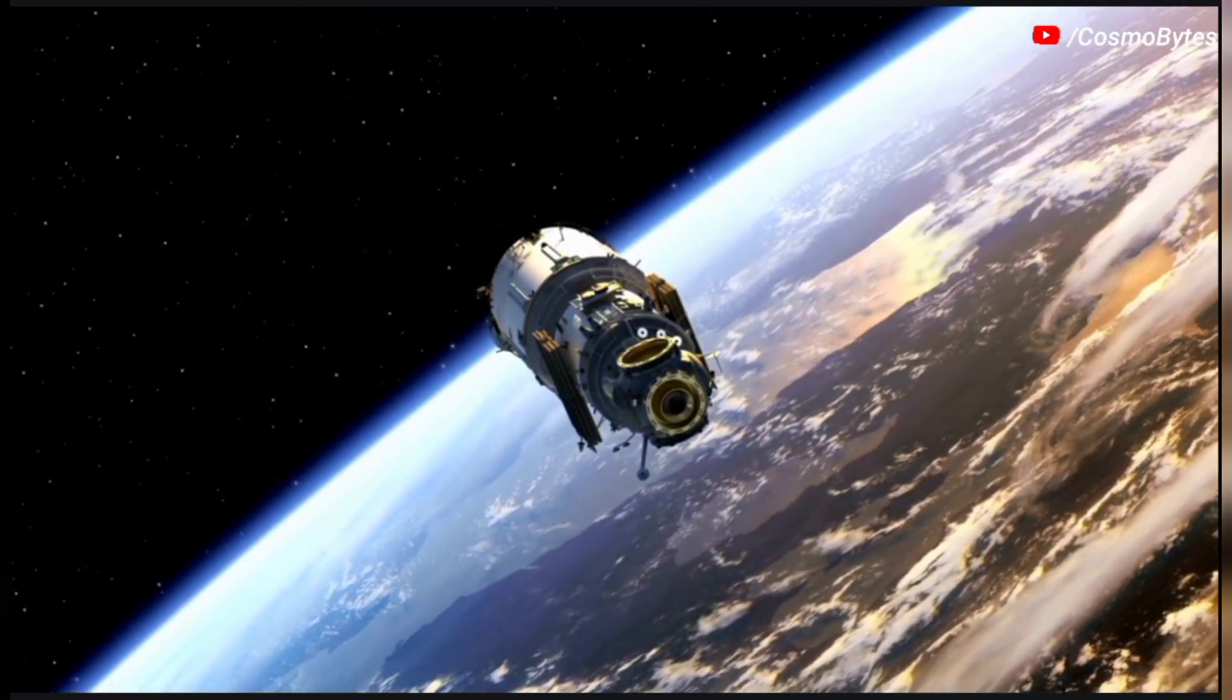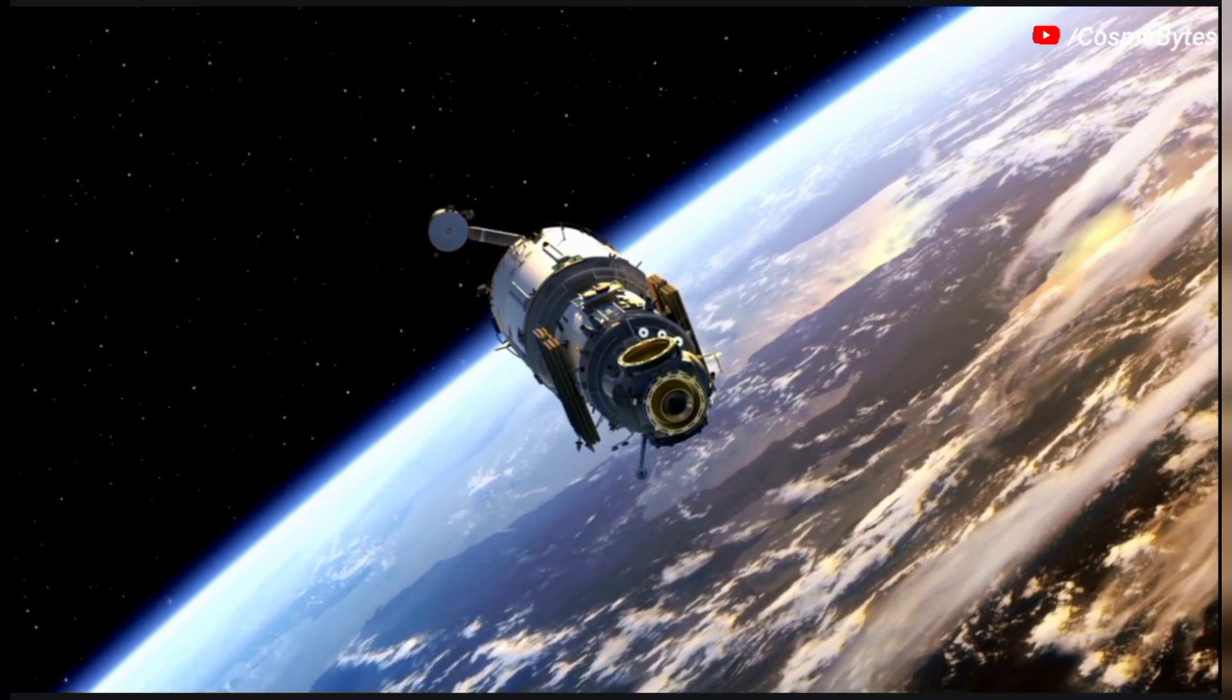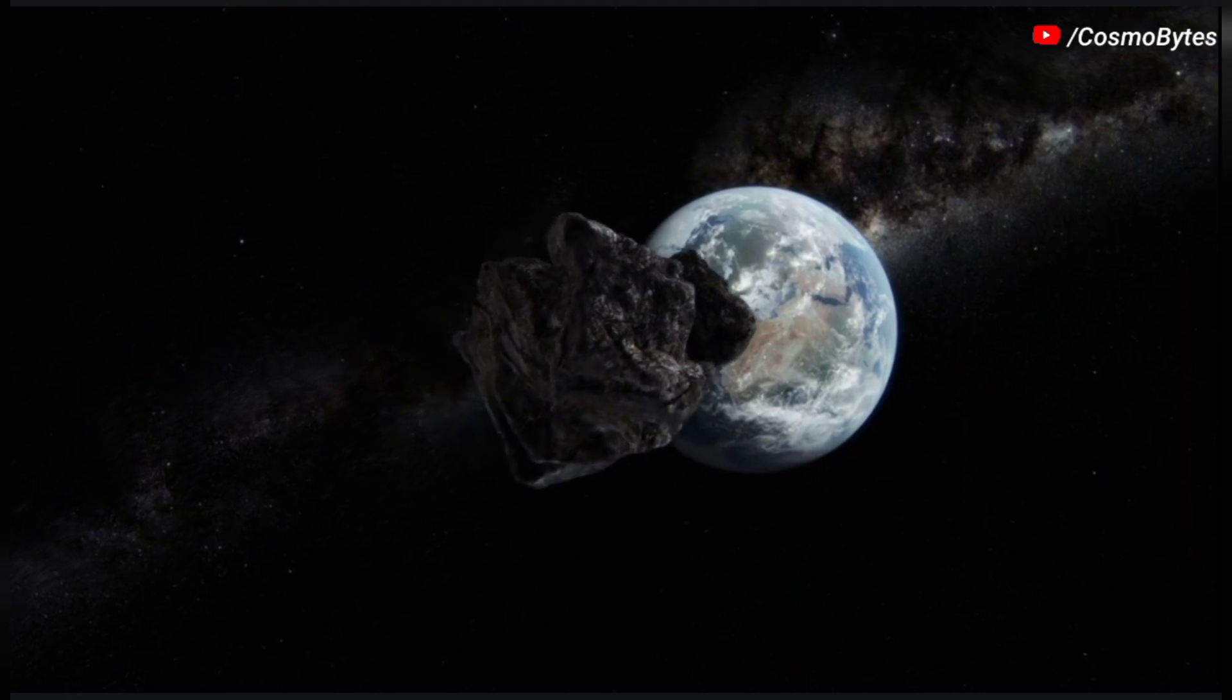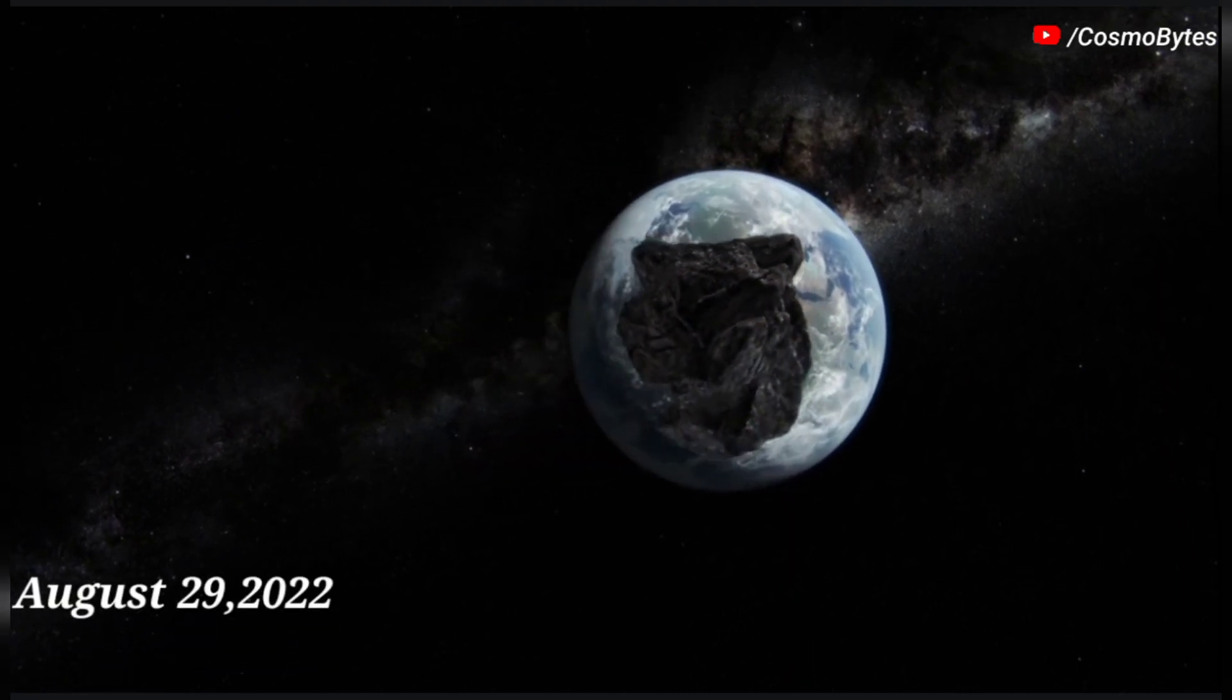According to NASA, two massive asteroids are moving towards Earth at very high speed and are expected to make their closest approach to the planet on August 28, 2022 and August 29, 2022.